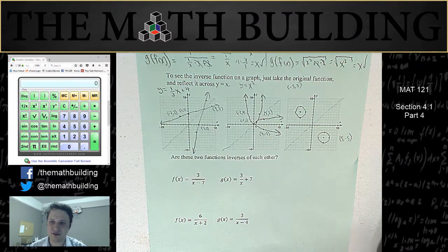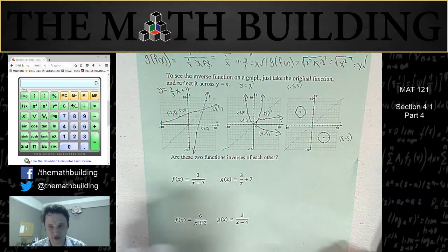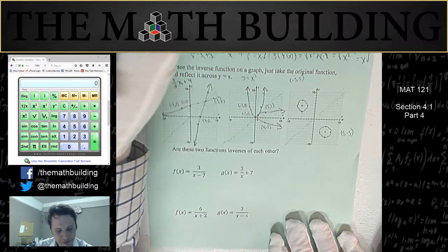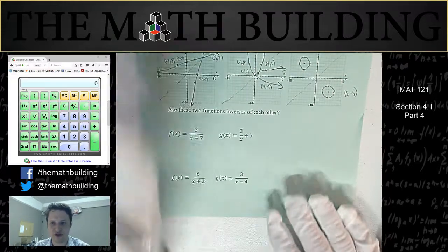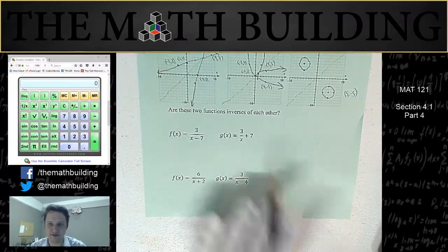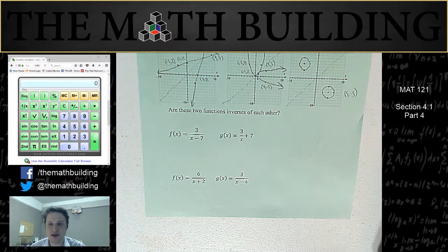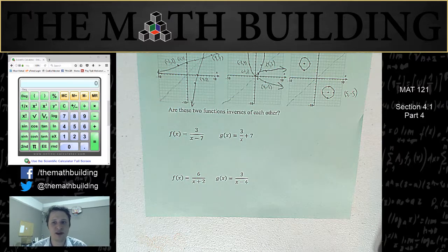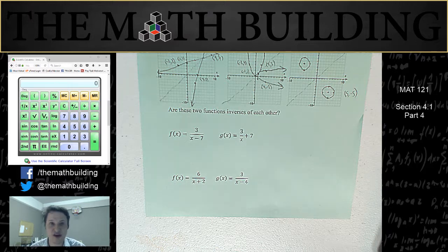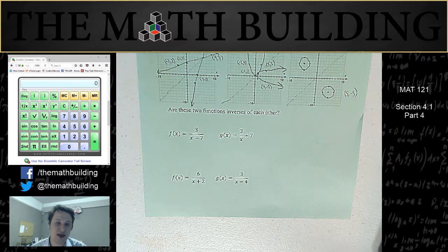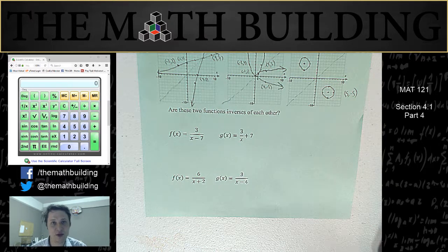So hopefully that makes sense of inverses on a graph. Let's do these last two problems: are these two functions inverses of each other? We have f and g. The best way to tell if two functions are inverses of each other is to find f of g of x and g of f of x. If both of those equal x, then we know that these are inverses of each other.